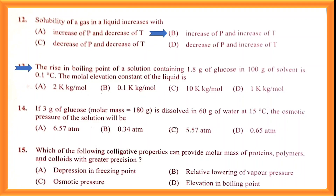Question number thirteen is a problematic part — please tell your answers in the comment section. Question number fourteen: 3 grams of glucose dissolved in 60 grams of water at 50°C. The osmotic pressure of the solution will be 6.57 atmospheres. Option A is the correct answer for question number fourteen.